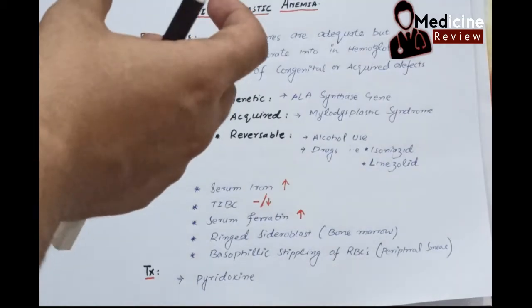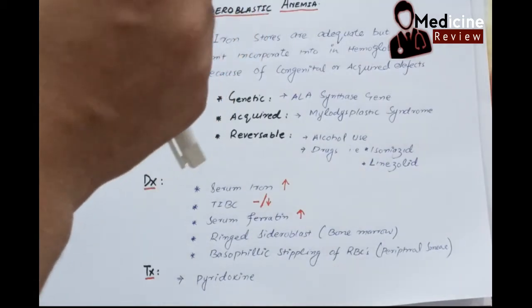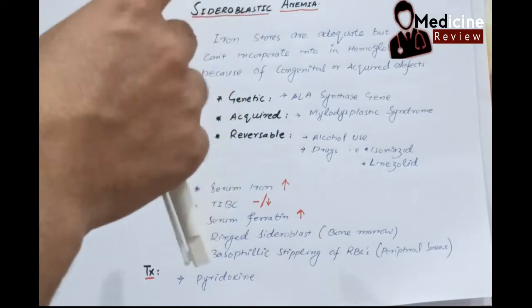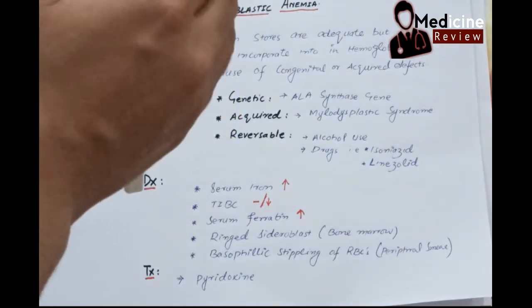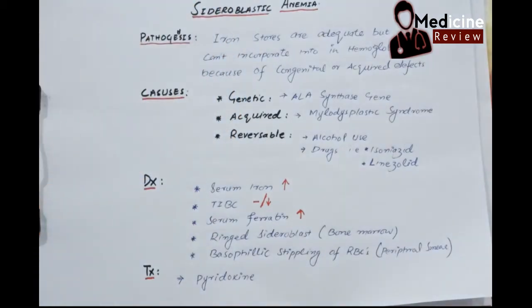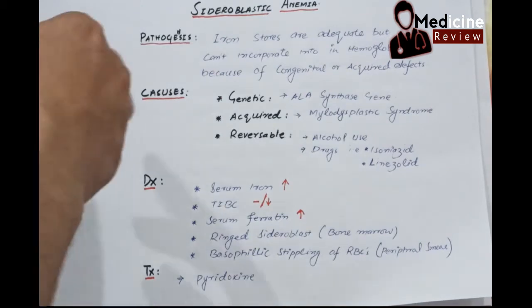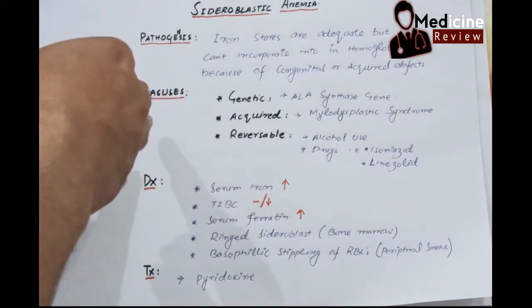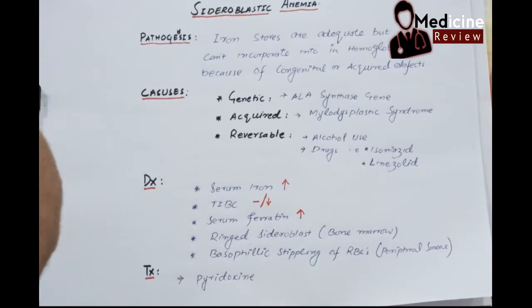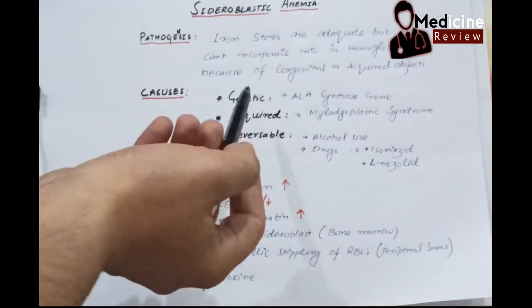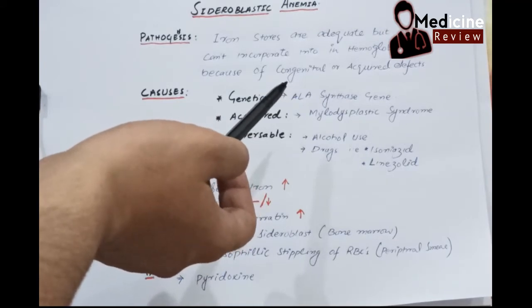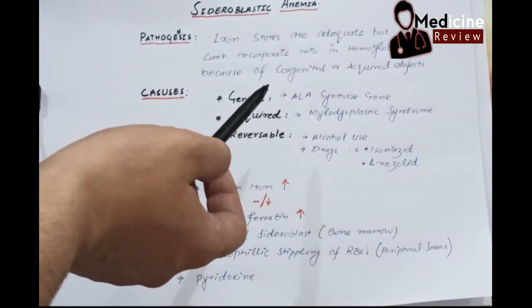The iron is iron-laden in the mitochondria of the RBCs in the bone marrow. There are different causes of sideroblastic anemia, like genetic causes, where the ALA synthase gene has a defect. ALA stands for amino levulinic acid synthase gene deficiency or defect.